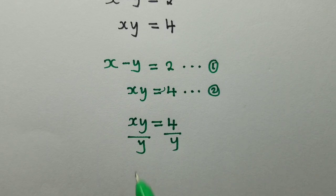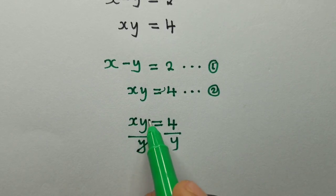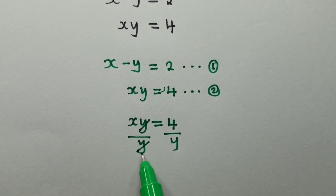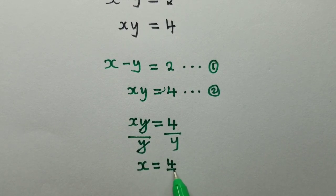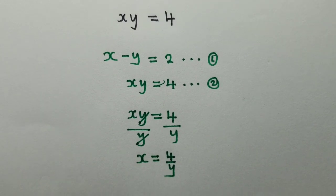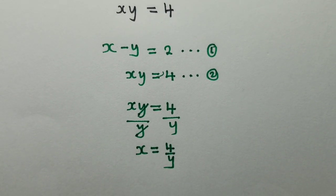So when I divide by y, y and y will cancel. I shall remain with x is equal to 4 over y. So this is my new equation.